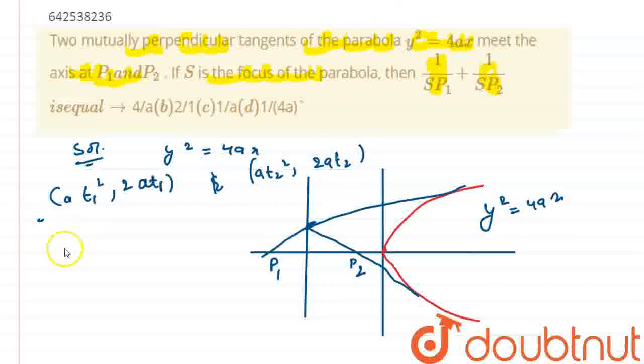Now the equation for the tangent at this point will be t1 y is equal to x plus at1 square. Now, we know that p1 is cutting at x-axis, meeting at x-axis. So, y coordinate will be 0. If I put y equals 0 here, it will give me x coordinate as minus at1 square. So, coordinate for p1 will be minus at1 square comma 0.